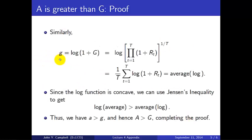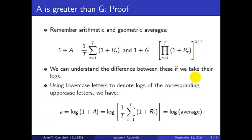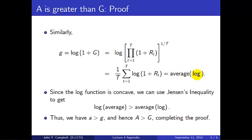Now similarly, let's calculate little g, which is the log of 1 plus big G. That's the log of this product. Now remembering that the log converts a power to a multiple and a product to a sum, we take the log of this thing and we're going to get the average of the logs of individual gross returns. So we can think about little g as the average of logs. In comparing little a and little g, we're comparing the log of the average (that's little a) to the average of the log (which is little g).